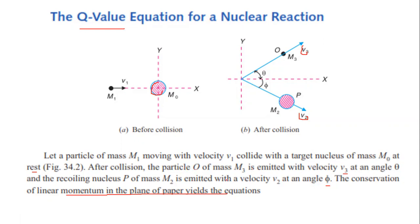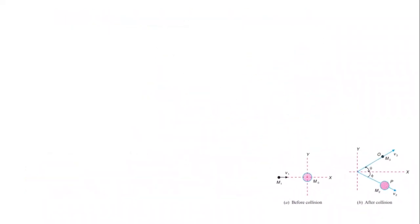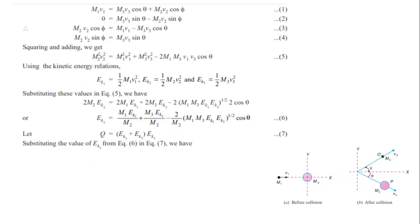Now let's explain the figure. Before collision and after collision, we apply the law of conservation of momentum. After collision, we propagate components in the x-direction and y-direction. The law of conservation of momentum along the x-axis gives: M1V1 = M3V3 cos theta + M2V2 cos phi.